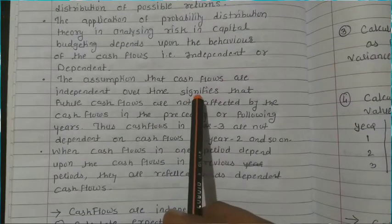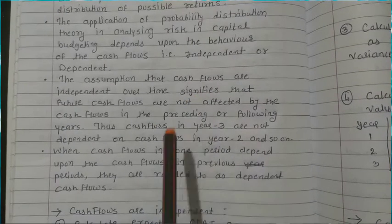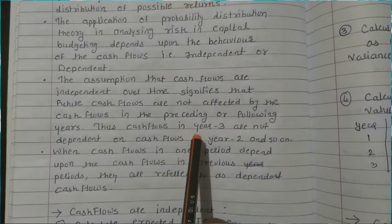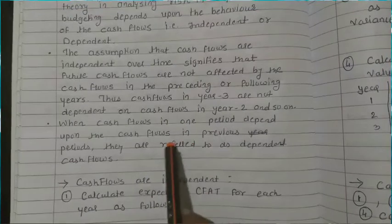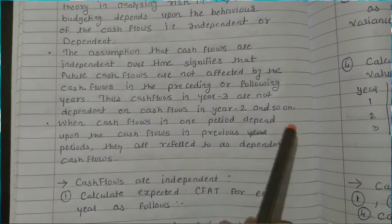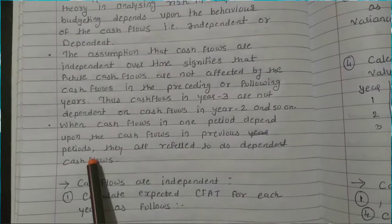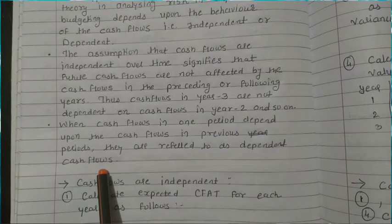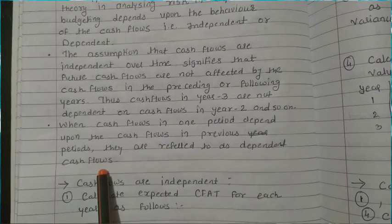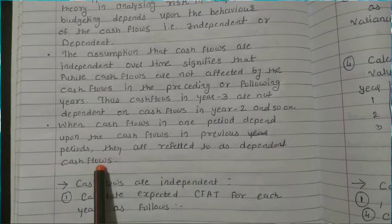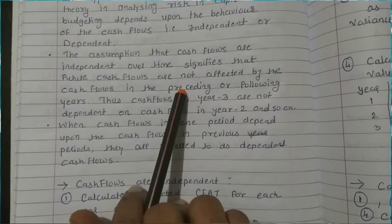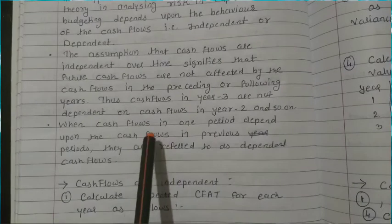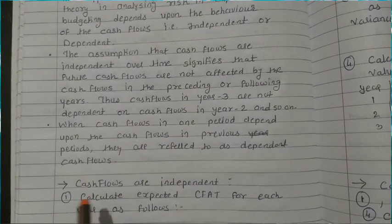Because the name itself is independent — it is not dependent on each other. Year three cash flow is not dependent upon the year two cash flow. Dependent cash flows means when the cash flows in one period depend upon the cash flows in the previous period — they are referred to as dependent cash flows.